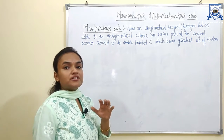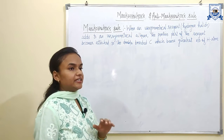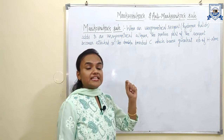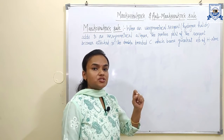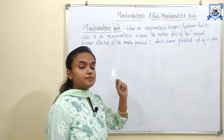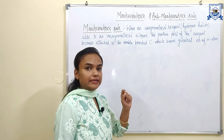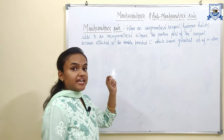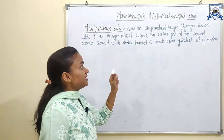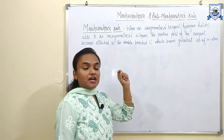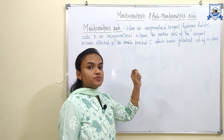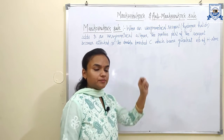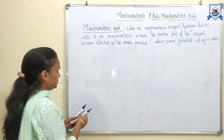Markovnikov was a scientist who stated that when an unsymmetrical reagent like HCl, HBr, or HI adds to an unsymmetrical alkene, the positive part of the reagent will attach to that carbon of the carbon-carbon double bond which bears the greatest number of hydrogen atoms. Now let's see the example.